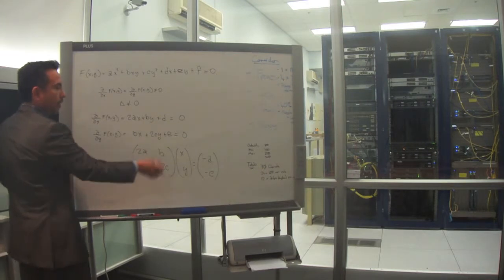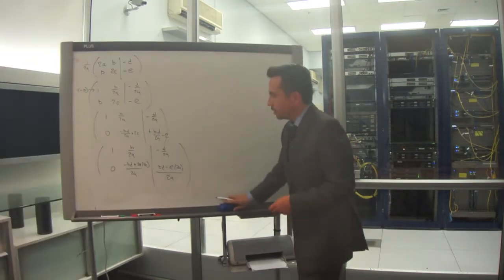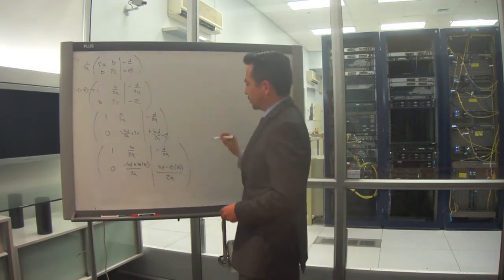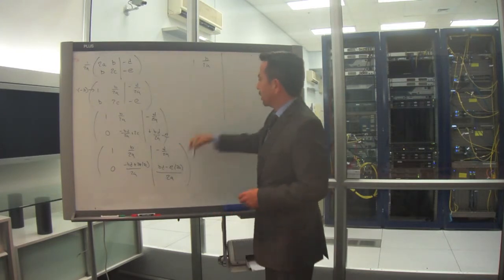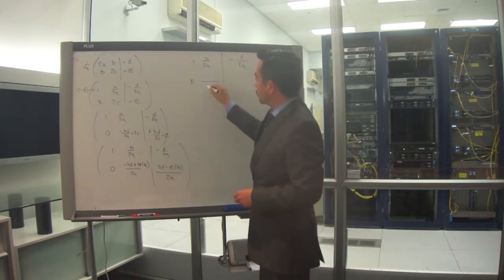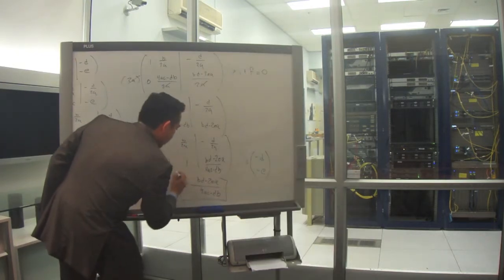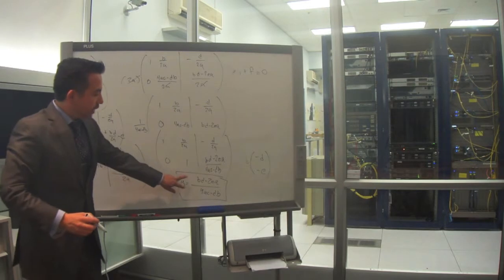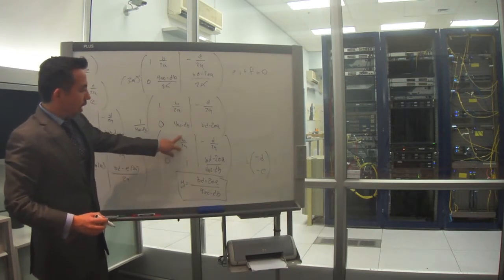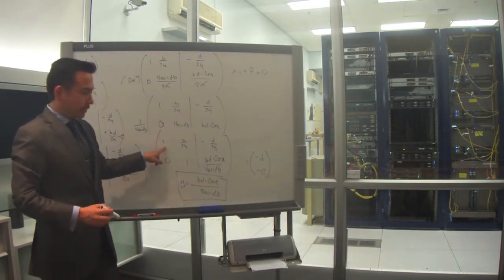I'm going to solve for y and then replace back. It's going to be a little bit messy, but it's all right. We get: minus d over 2 is 2a, and this is 4ac. So y is equal to that value, and I can replace this value in y, put this value on the other side, and get a value for x.